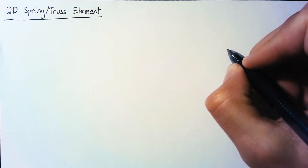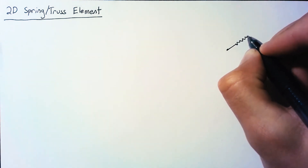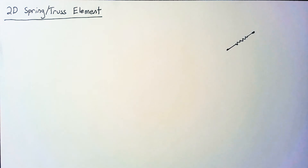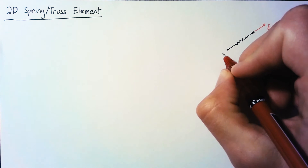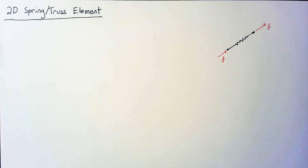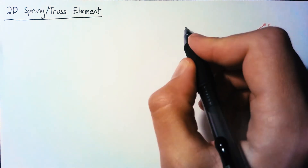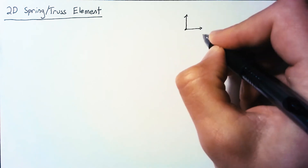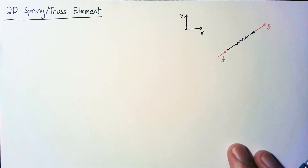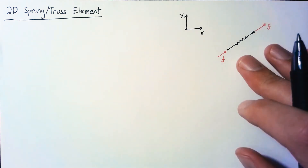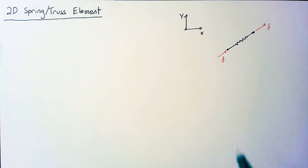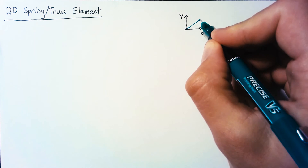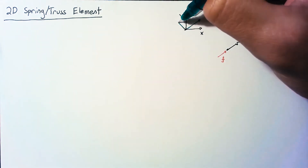Our spring is going to be arbitrarily oriented, meaning that we don't know ahead of time what the angle will be. And as before, we're going to have some forces being applied to this spring. The most important thing here is to be able to talk about how this spring is oriented, so we need to establish some reference frames. Our x and y reference frame will have x pointing to the right and y pointing directly up. But it's also very convenient to talk about a reference frame specific to this spring, with an x-axis parallel to the spring and a y-axis perpendicular to the spring.